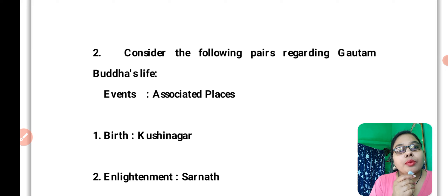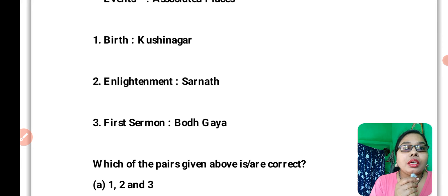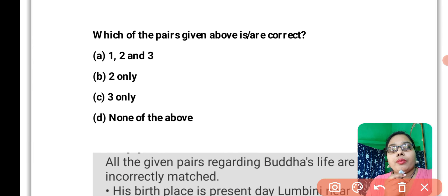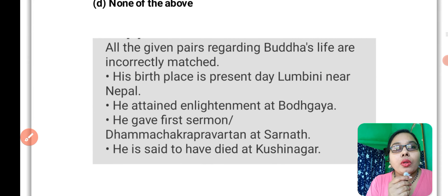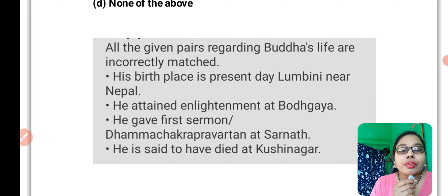Look at this: Where is the birthplace? Then enlightenment, Sarnath, first sermon, and death. The answer is that all the given pairs regarding Buddha's life are incorrectly matched. The birthplace is not in Nepal as commonly stated in the option. The first sermon was given in Sarnath, and the first sermon was confirmed at Sarnath.